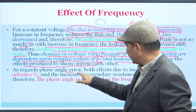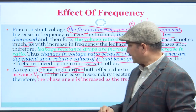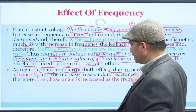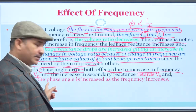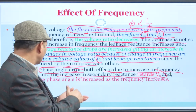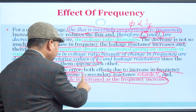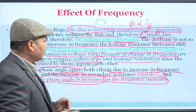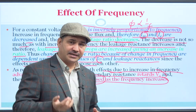As regards the phase angle error: when frequency increases, both effects — the advancement of Vp and the increase in secondary reactance that retards Vs — combine. Therefore, the phase angle increases as the frequency increases. So for ratio error, the effect is neutralized by opposing factors; but for phase angle error, it increases with increasing frequency.